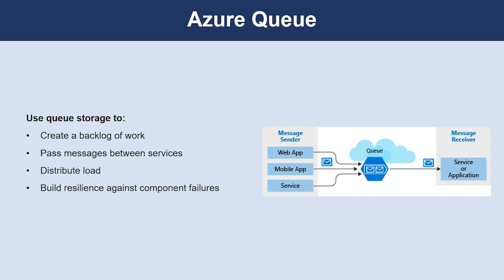Azure Queue Storage is a service for storing large numbers of messages that can be accessed from anywhere in the world. It can be used to help build flexible applications and separate functions for better durability across large workloads. When application components are decoupled, they can scale independently. Queue storage provides asynchronous message queuing for communication between application components, whether running in the cloud, on desktop, on-premises, or on mobile devices.